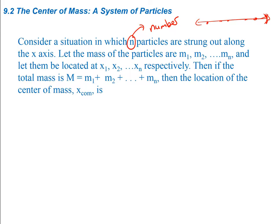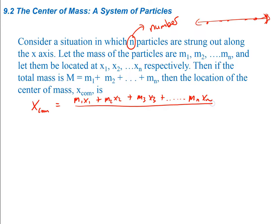So x_com — com stands for center of mass — is going to be m1*x1 plus m2*x2 plus m3*x3, etc., all the way through mn*xn, divided by capital M, which is the total mass of all the particles. This shows you the x position of the center of mass.